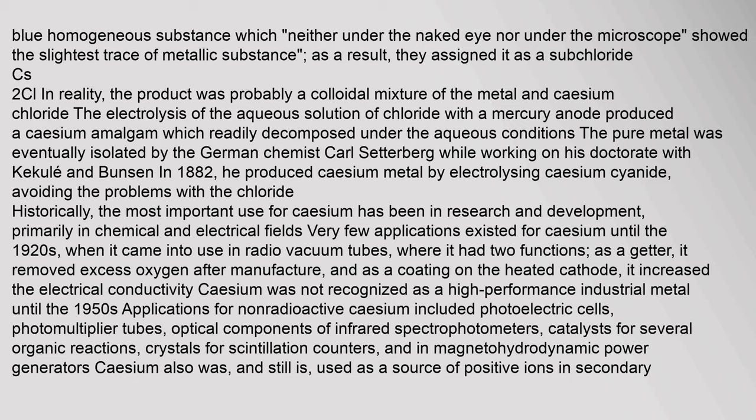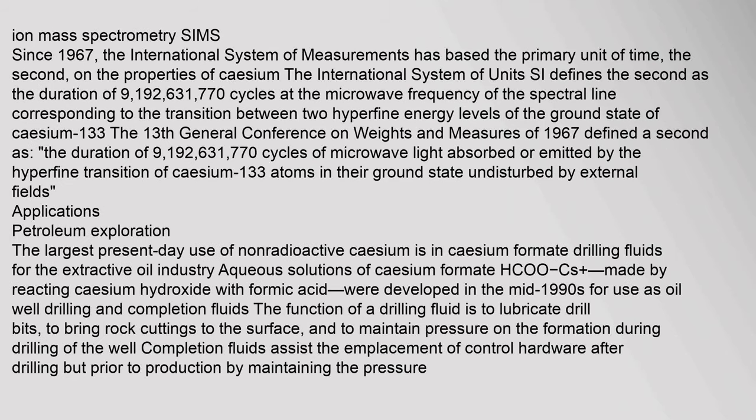Historically, the most important use for caesium was in research and development, primarily in chemical and electrical fields. Very few applications existed until the 1920s, when it came into use in radio vacuum tubes — as a getter to remove excess oxygen after manufacture, and as a coating on heated cathodes to increase electrical conductivity. Caesium was not recognized as a high-performance industrial metal until the 1950s, when applications included photoelectric cells, photomultiplier tubes, optical components of infrared spectrophotometers, and magnetohydrodynamic power generators.